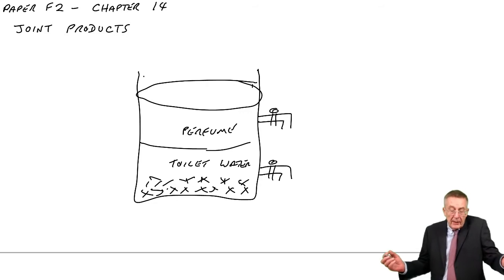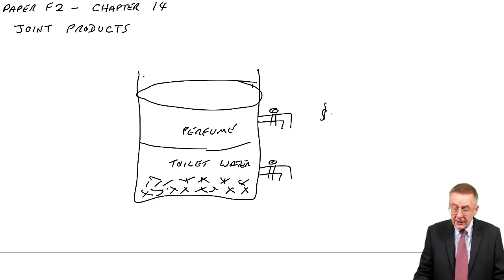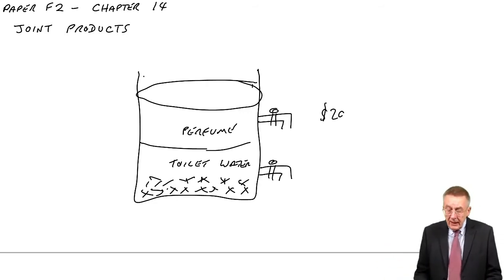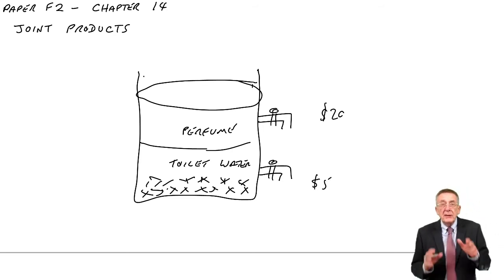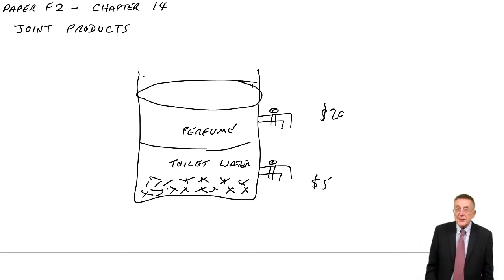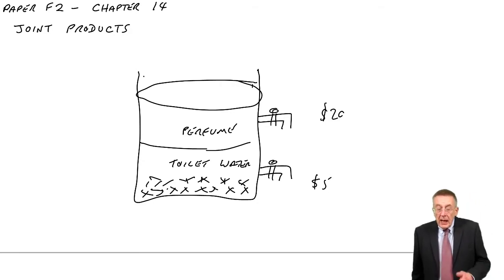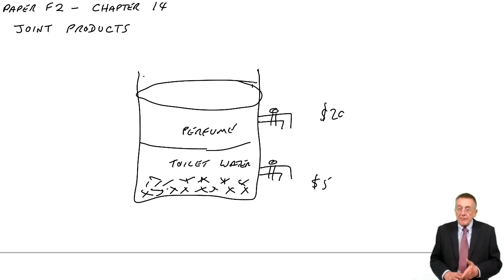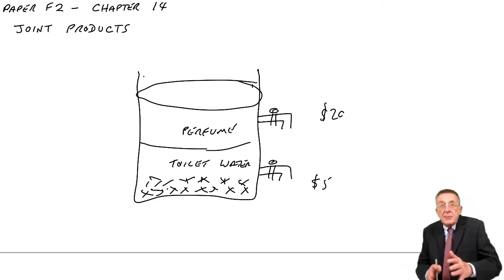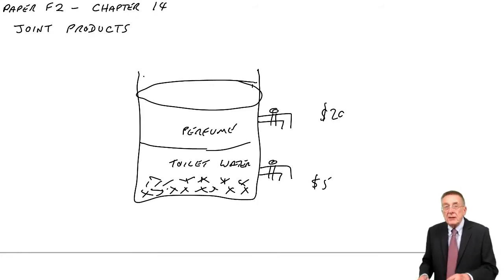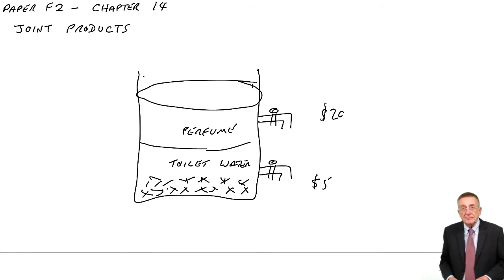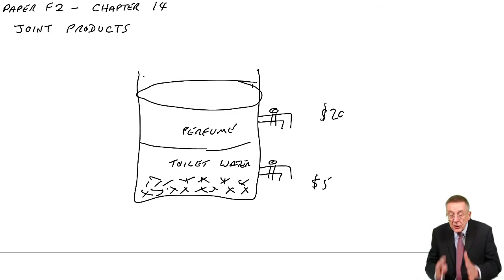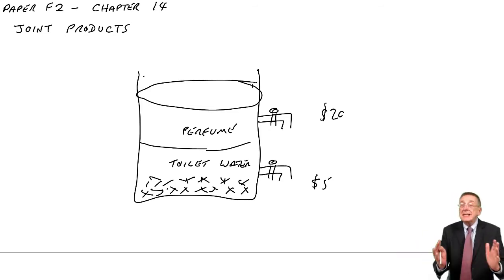Perfume is a lot more expensive — maybe it sells at $20 a bottle. Toilet water maybe sells at only $5 a bottle. But with two separate products coming out, the question is how are we going to get the cost per unit for each of them separately? In a sense, we can't, because they're made together. You can't say this bit of the flowers is a cost of perfume and this bit is a cost of toilet water.